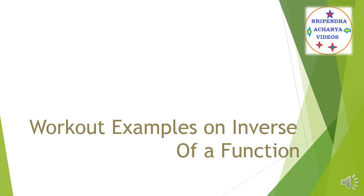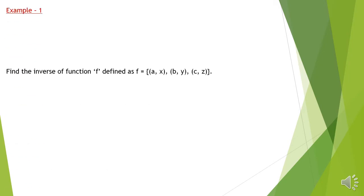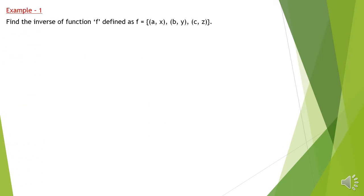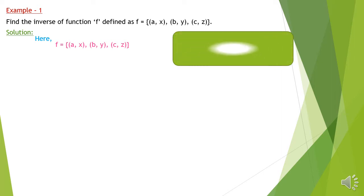Let's move forward to our first example. Our first example is on your screen — there is a function f which is defined as a set of ordered pairs. Let's start the solution. When a function is given as a set of ordered pairs, it will be very easy to find the inverse.